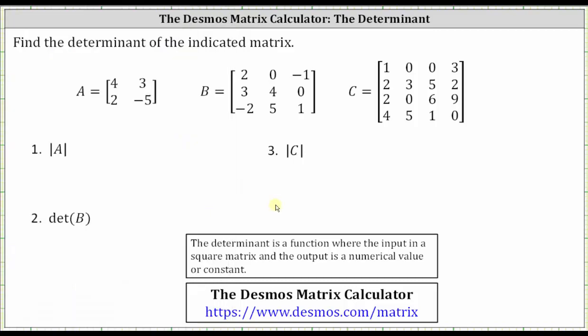If we go back to the problem just for a moment, there are two ways to denote a determinant: vertical bars, as well as DET. We need to find the determinant of matrix A, matrix B, and matrix C.